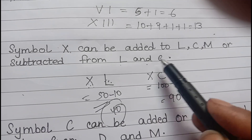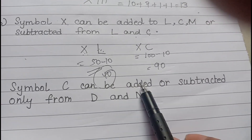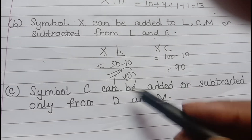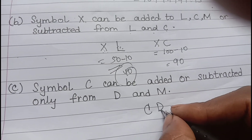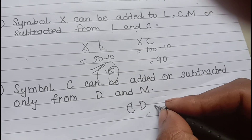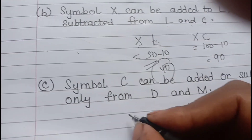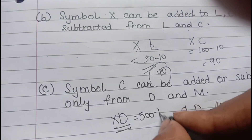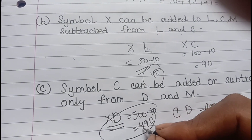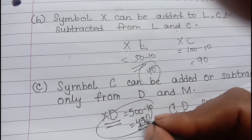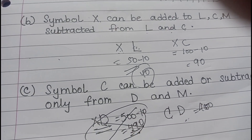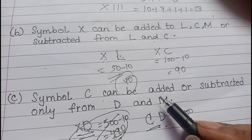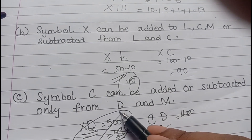The main rule for subtraction is important. Symbol C can be added to or subtracted from D and M. For example, CD is 500 minus 100 = 400, and CM is 1000 minus 100 = 900. But you cannot write DX for 490 — that is wrong. We have other ways to write 490. So remember: C can only be subtracted from D and M.